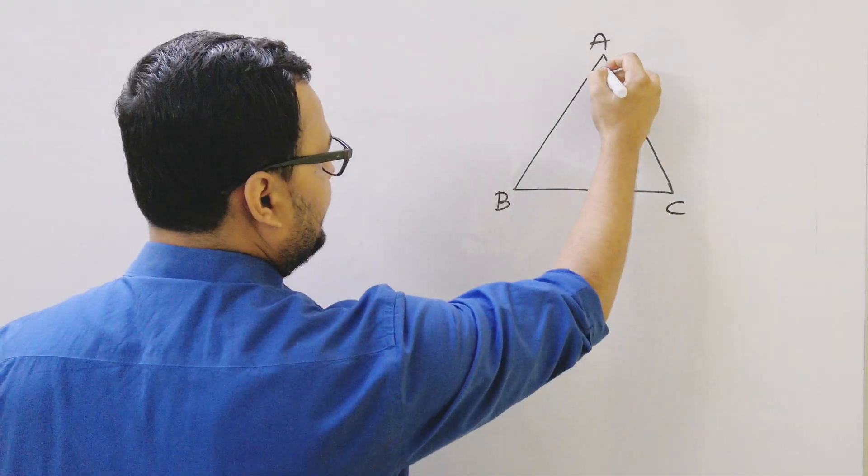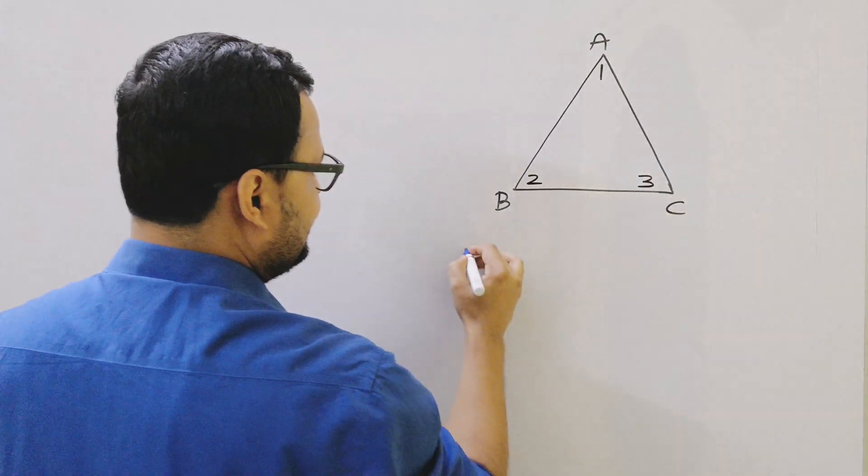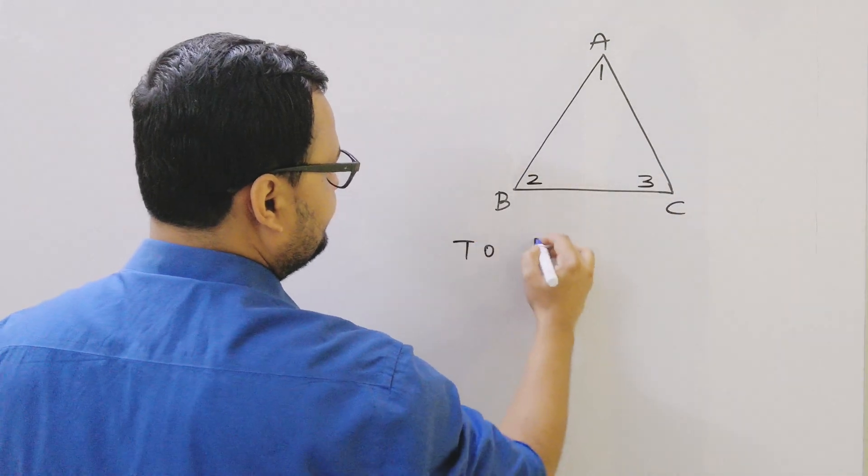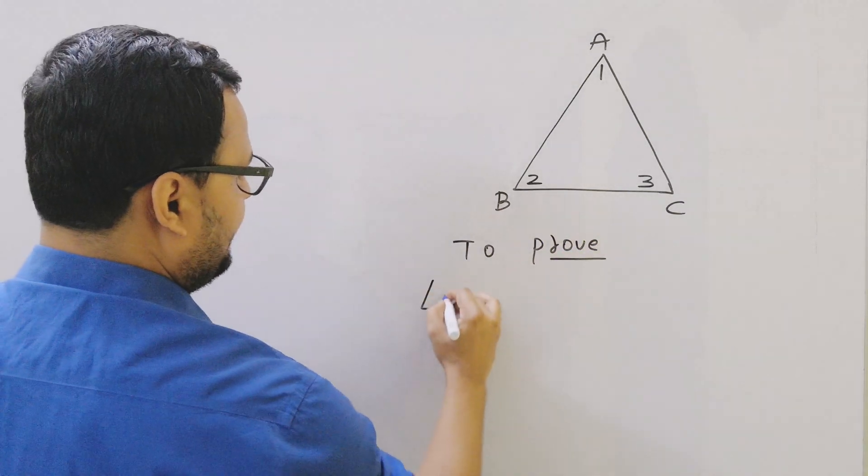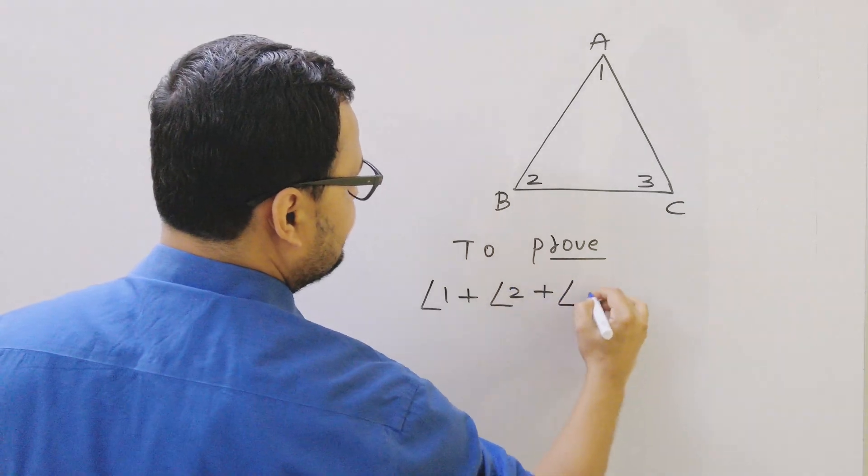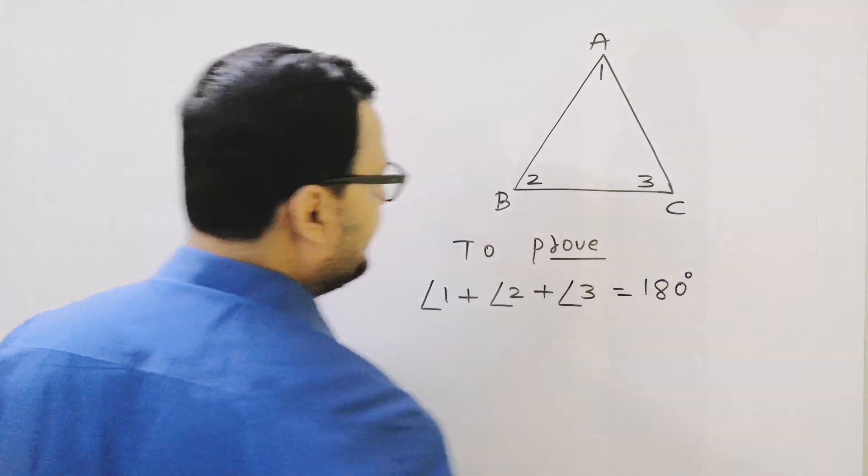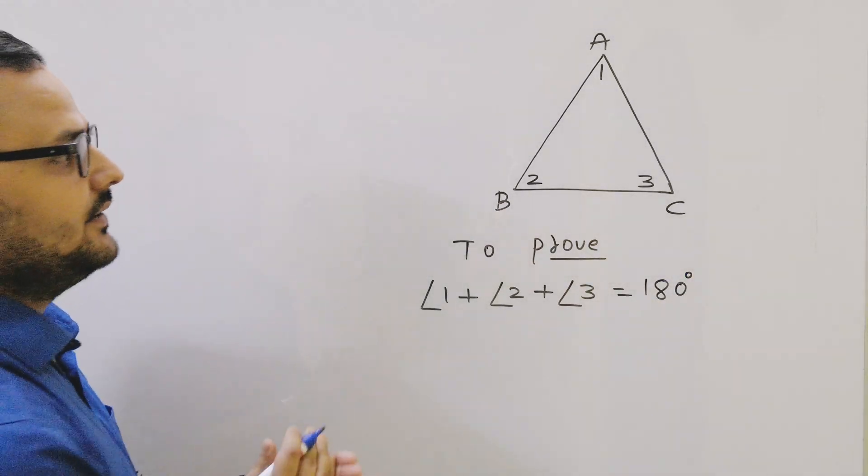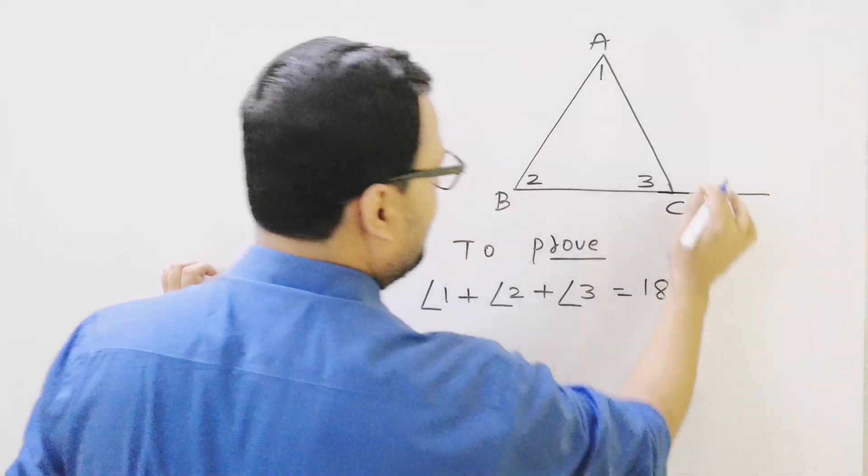If this is angle 1, 2, 3, it means I have to prove that angle 1 plus angle 2 plus angle 3 equals 180 degrees. Now I am going to extend the line BC, so I will get this exterior angle.